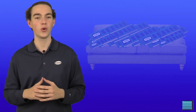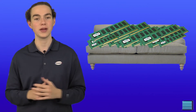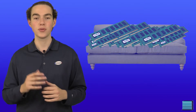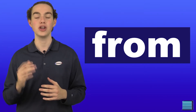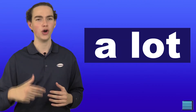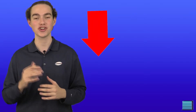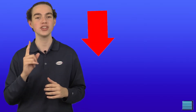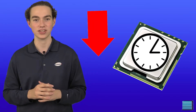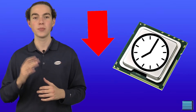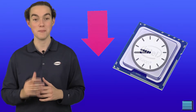Being able to comfortably support large amounts of memory makes RDIMM perfect for servers, because the most common server applications benefit a lot from having more memory. However, the downside of having a memory register is that instructions will take about one CPU clock cycle longer to execute, as the signal must pass through the register first before reaching the memory.